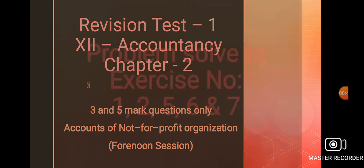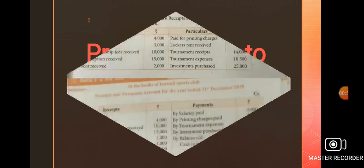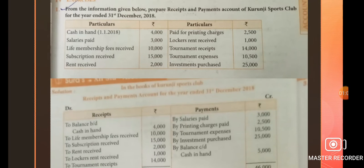First we will see the problems solved: exercise numbers 1, 2, 5, 6, and 7. These questions will be discussed in this class. For question number 1, from the following information given below, prepare receipts and payment account of Kurunji Sports Club for the year ended 31st December 2018.